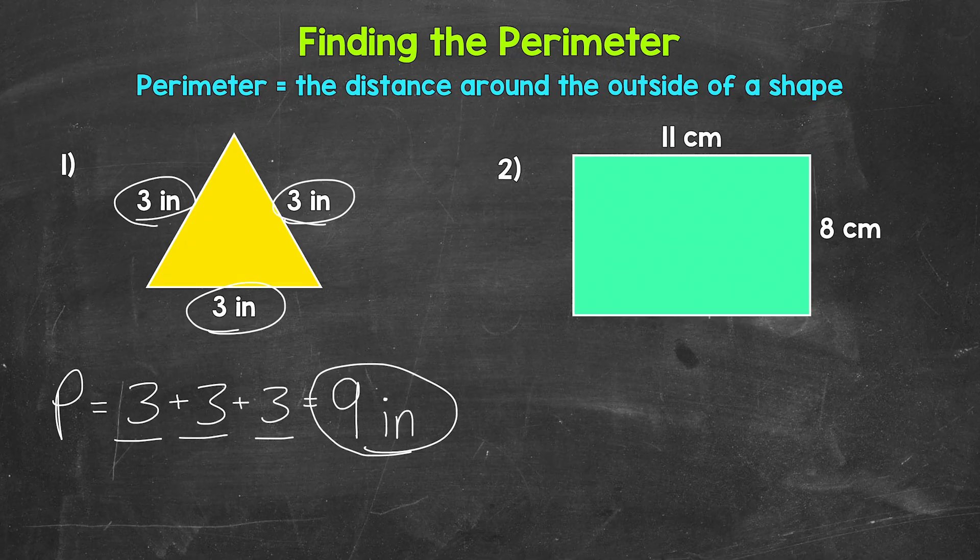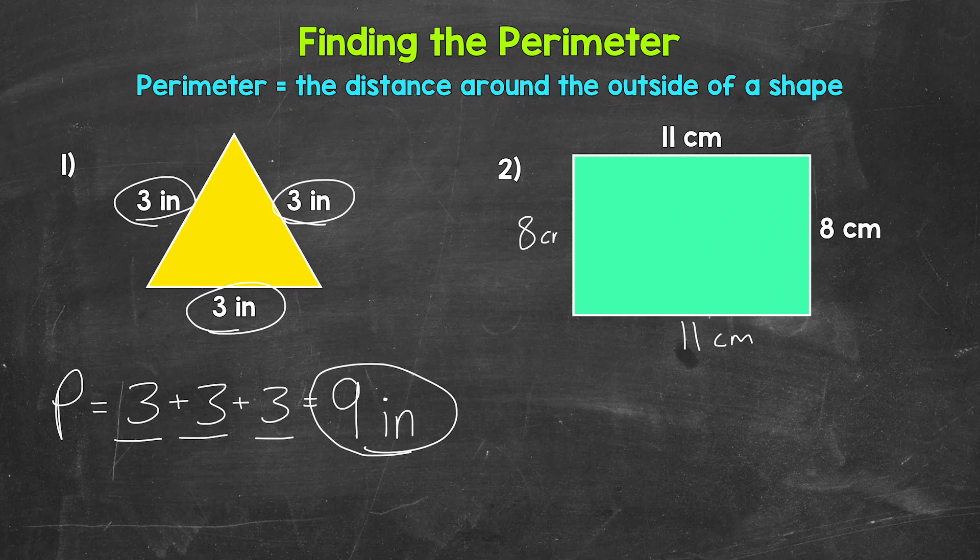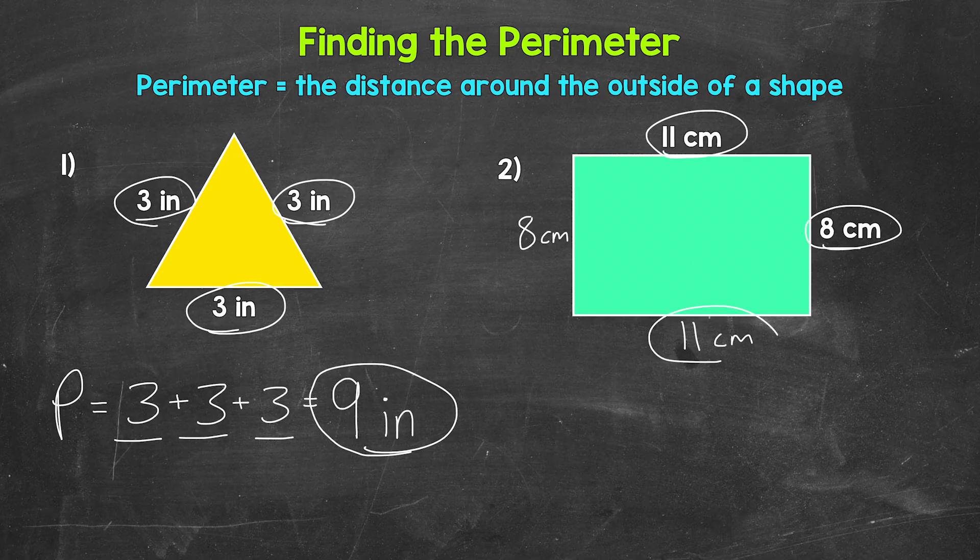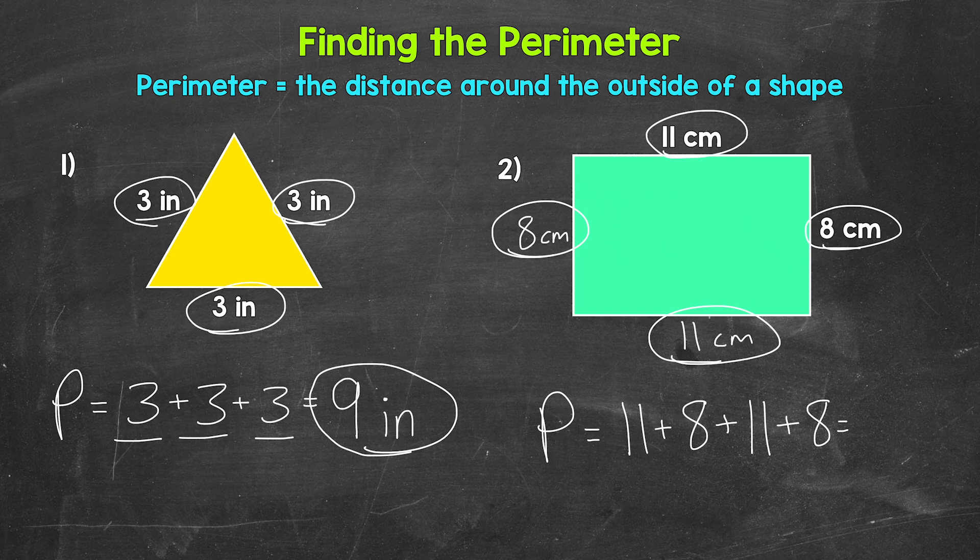Since this is a rectangle, the opposite sides are the same length. So across from 11 centimeters, this is 11 centimeters as well. And across from eight centimeters, this is eight centimeters too. So for the perimeter, we need to do 11 centimeters plus eight centimeters plus 11 centimeters plus eight centimeters. So perimeter equals 11 centimeters plus eight centimeters. And I do want to mention it does not matter what order we add the side lengths in. As long as they are all included, we will get the correct perimeter.